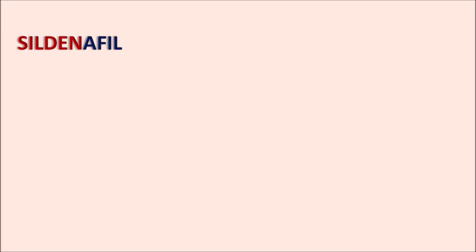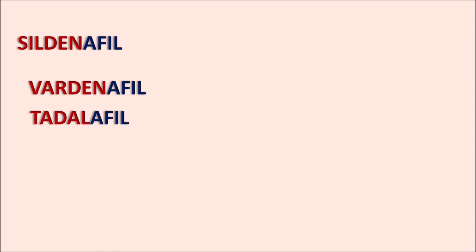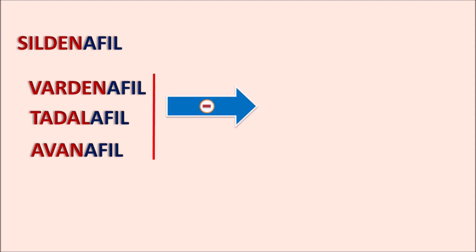Let us start with sildenafil. We can observe the suffix '-afil.' We have a few other drugs with a similar suffix, like vardenafil, tadalafil, and avanafil. All these drugs are similar in mechanism of action and they are going to inhibit phosphodiesterase type 5 enzyme.